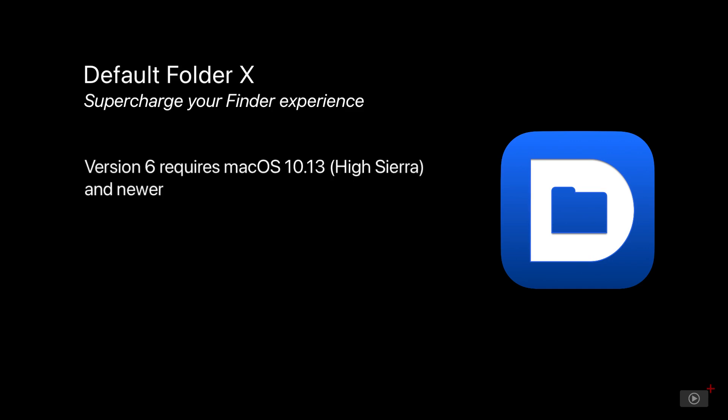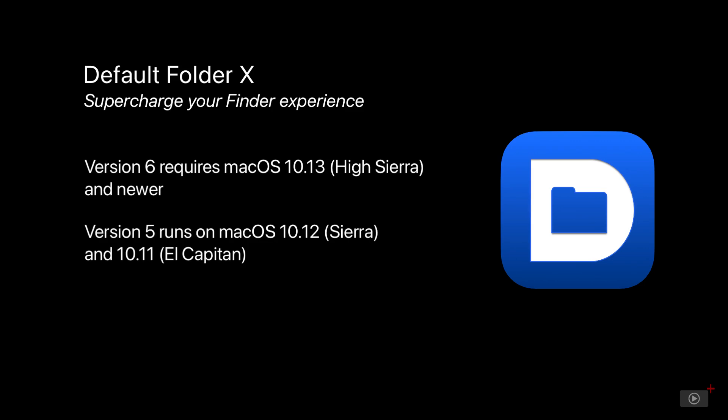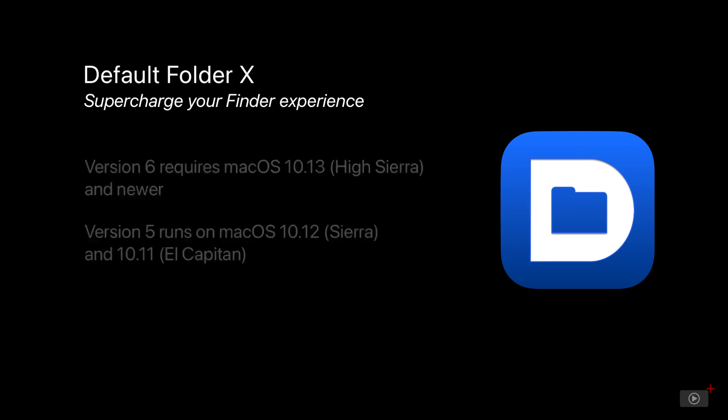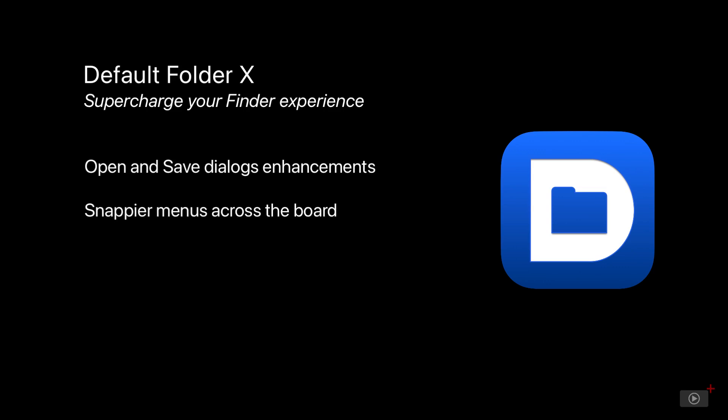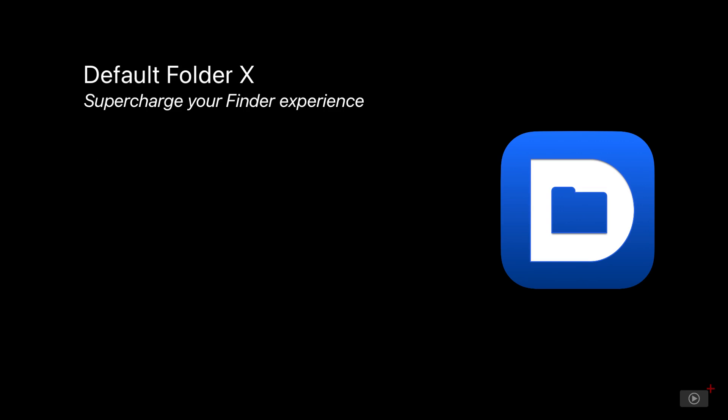Default Folder X has a cult following in the Mac community because it takes one of the most commonly used utilities on macOS, namely the Finder, and it gives it more functionality. It enhances the open and save dialogues in all of your applications so you can do things faster. The menus are snappy, the search is incredibly quick, and everything is just faster. And today I'm going to show you how it's configured.